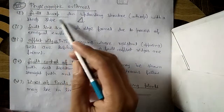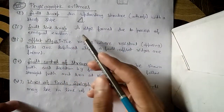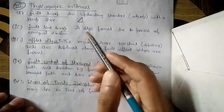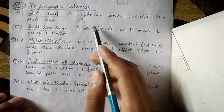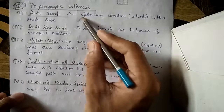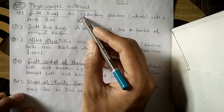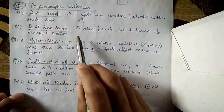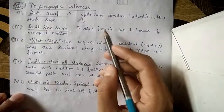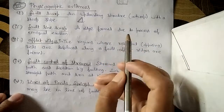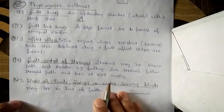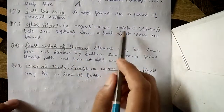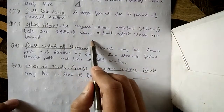The first physiographic evidence is a fault scarp — an outcrop, meaning a standing structure above the earth's surface, with a steep slope. The second is fault line scarp — a ridge formed due to unequal erosion, which is an uplifted structure formed where erosion is unequal.